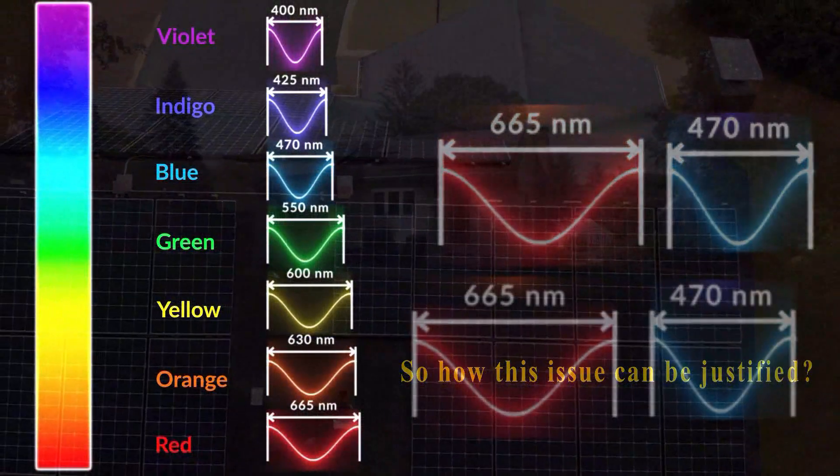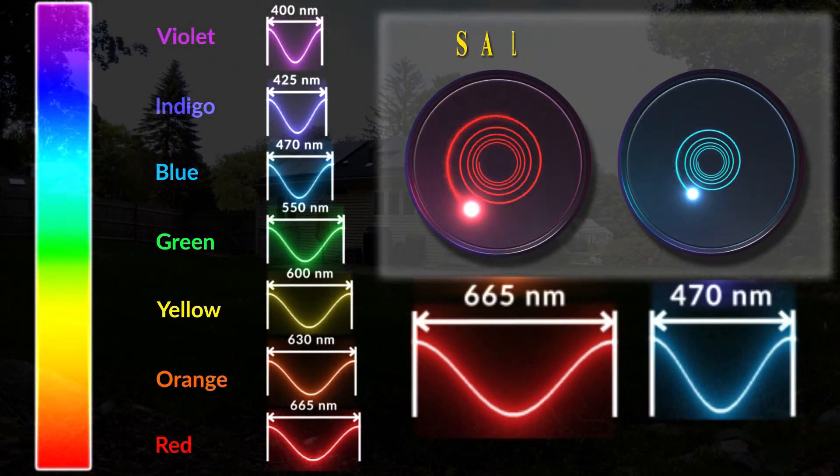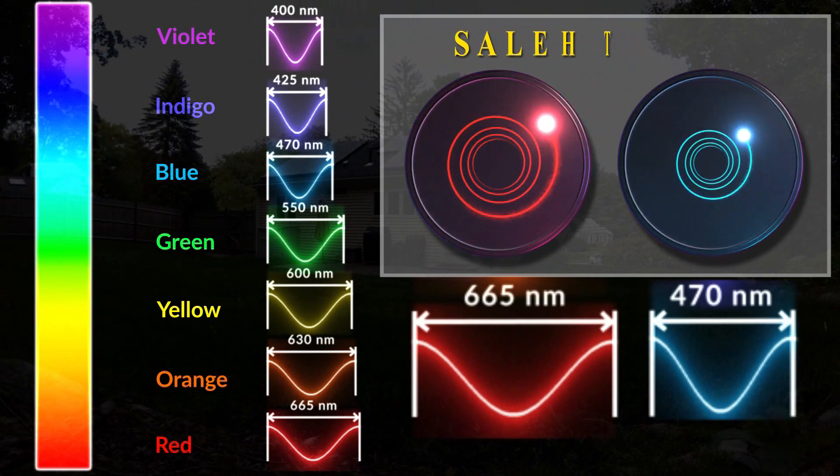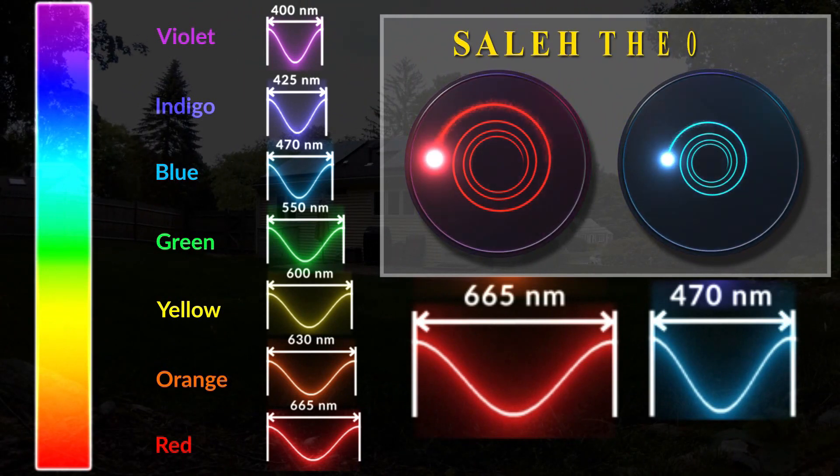However, in Solich theory, the red light photons, due to their larger gyro radius, have more rotational energy than the blue light photons. Therefore, it is natural for the red light photons to show better efficiency in solar cells.